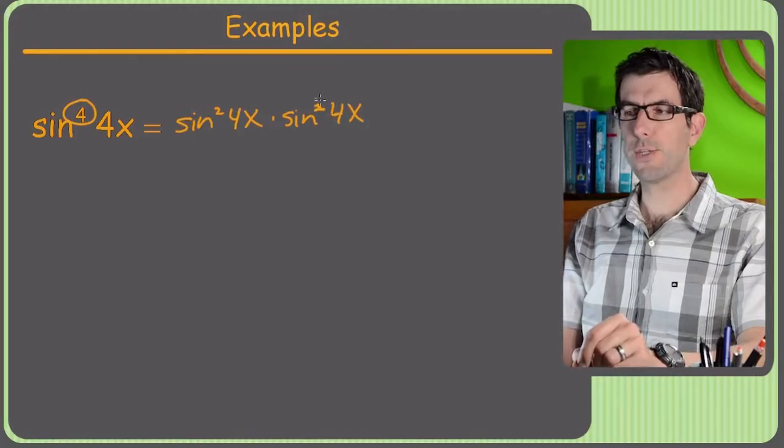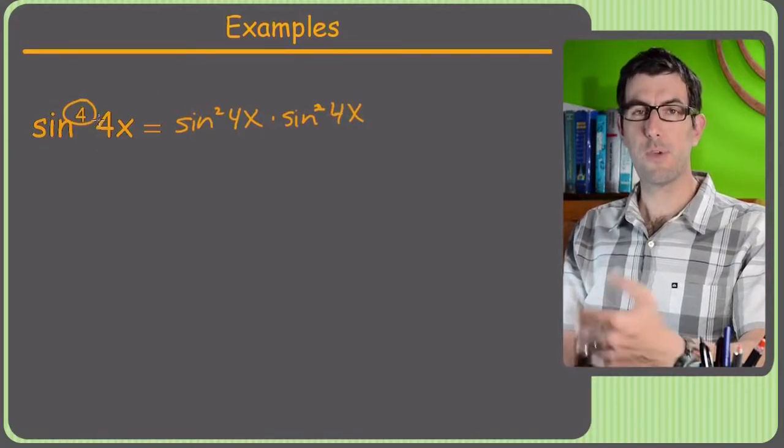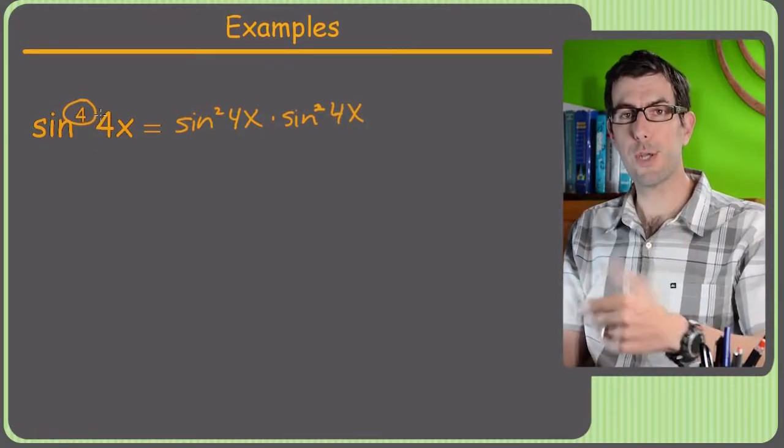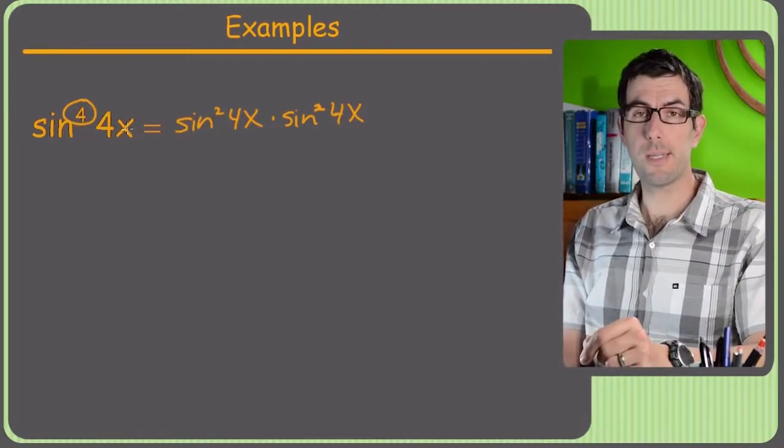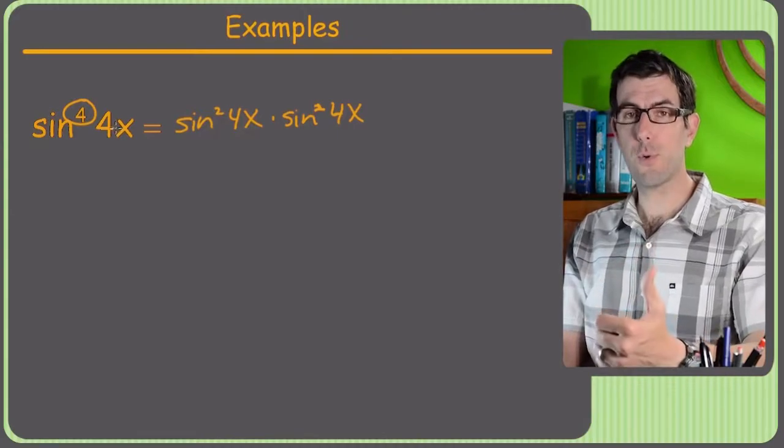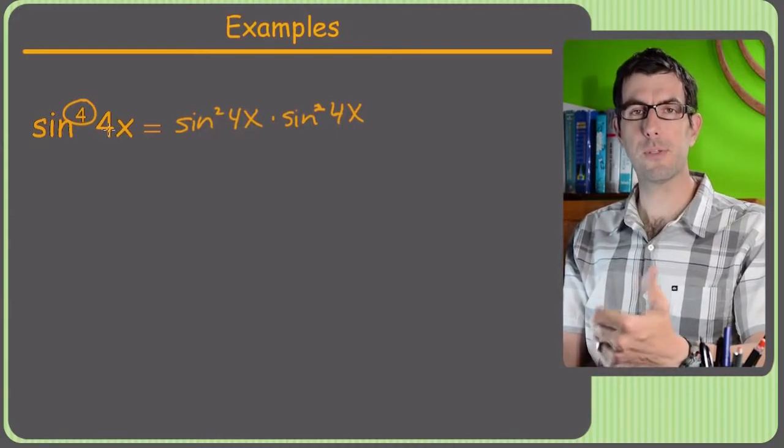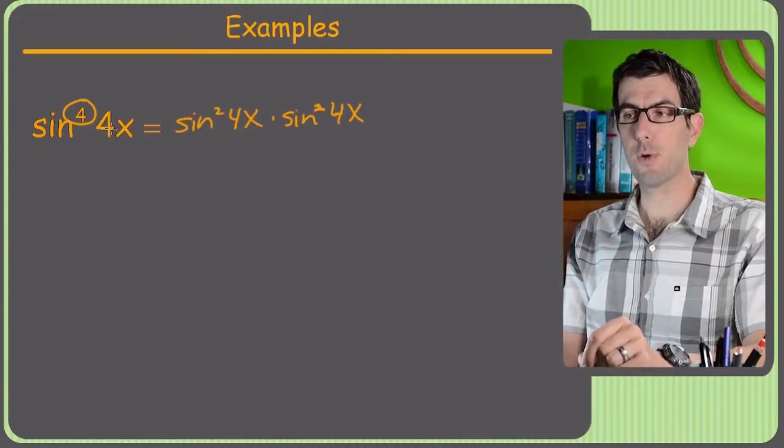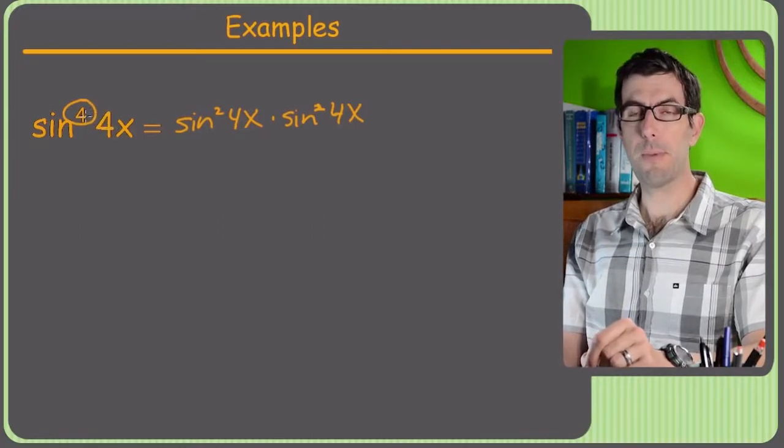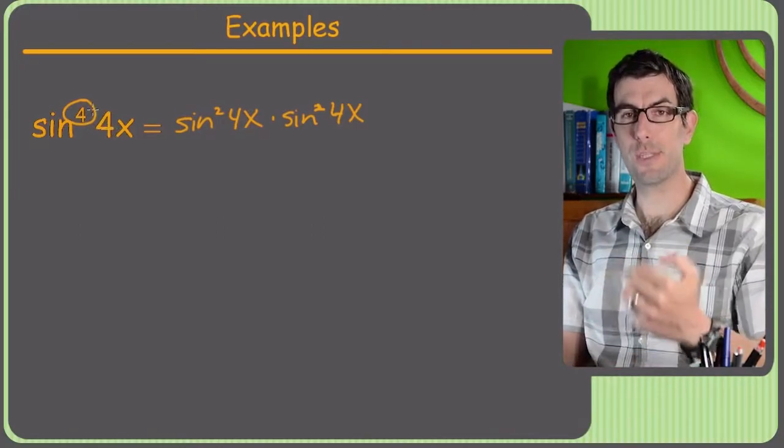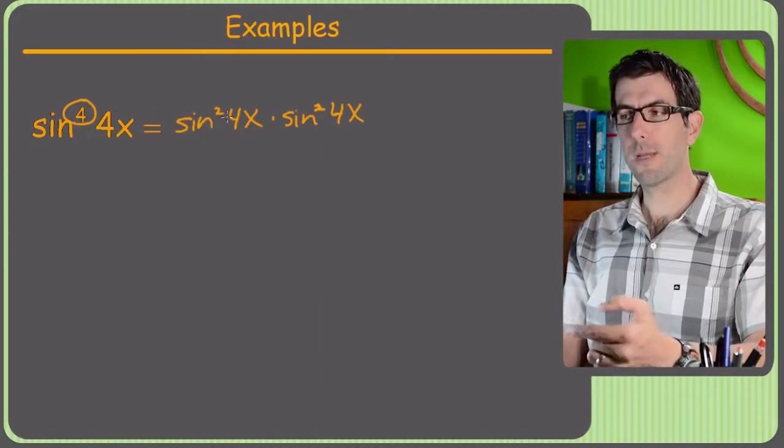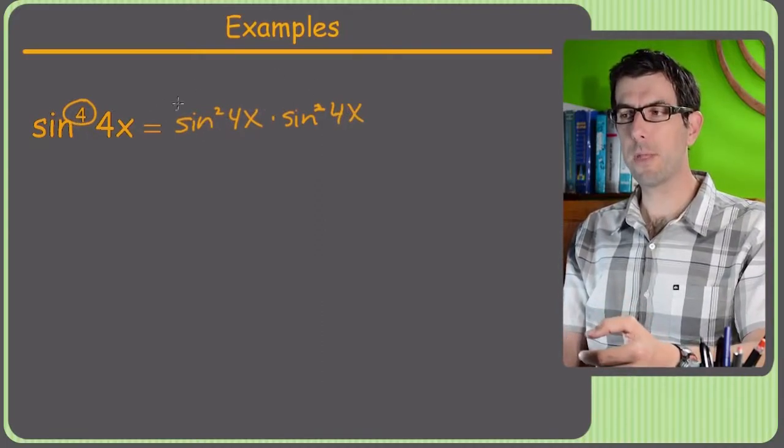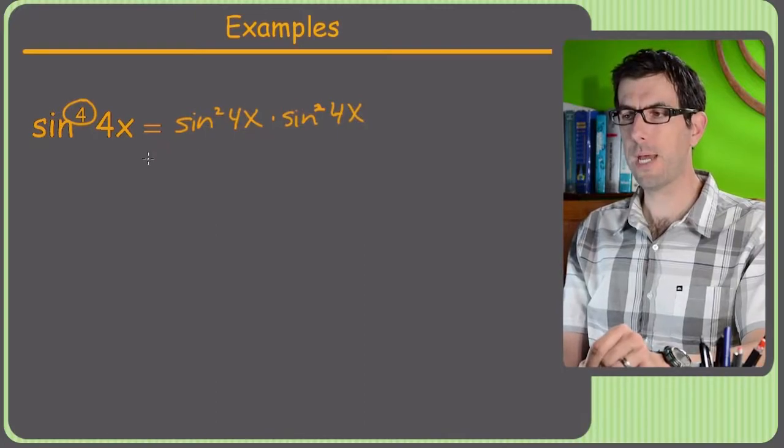So sine squared 4x times sine squared 4x. And by the way, the directions on a problem like this, you know, if you encountered this on calculus or something, you might do this on your own. But if this is a trig problem, you would just say, the instructions would say something like, reduce this to first order trig functions, meaning exponents of 1, you know, no exponents of 2 or higher. So the power reducing formula does just that. It reduces the powers of things. So if we reduce sine fourth to sine squared times sine squared, now we're going to use our formula on each of these separately, and we'll see what happens.